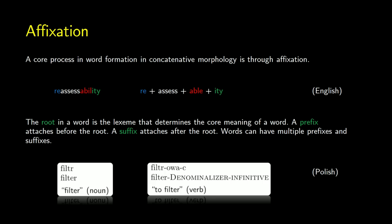Most bound morphemes in a language are done through affixation — they're called affixes. In a word like 're-assess-abil-ity', we have four different morphemes. 'Assess' is the root — it gives the core meaning. Then we have other affixes: 're' comes before, 'abil' and 'ity' come after. Things to the left of the root are called prefixes, and things to the right are called suffixes. So 're' is a prefix, and 'abil' and 'ity' are suffixes.